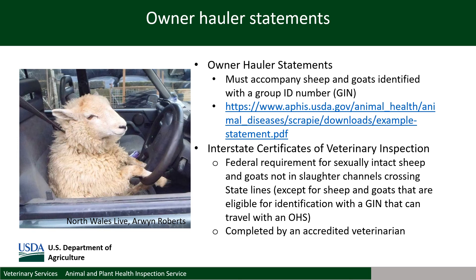An Interstate Certificate of Veterinary Inspection, or ICVI, is federally required for sexually intact sheep and goats crossing state lines that are not in slaughter channels, except for the groups of sheep and goats already mentioned that can be identified with a group identification number and travel with an OHS. The ICVI is completed by an accredited veterinarian who individually inspects each animal for health and records its individual official ID on the document. These are federal requirements and there may be additional state requirements, or events may require an ICVI even if the animal originates in the same state as the event.